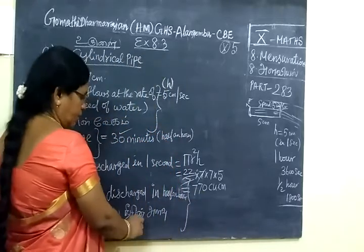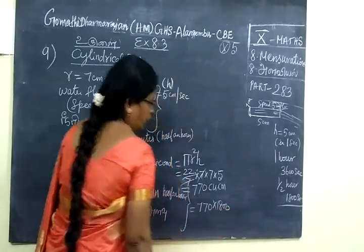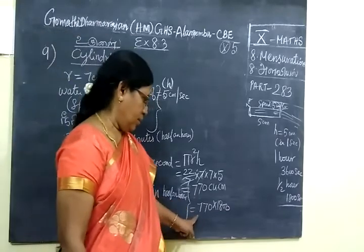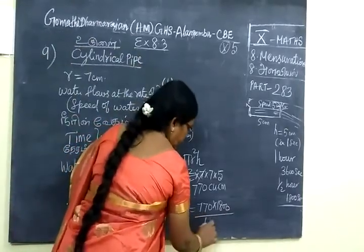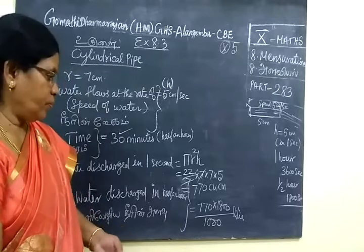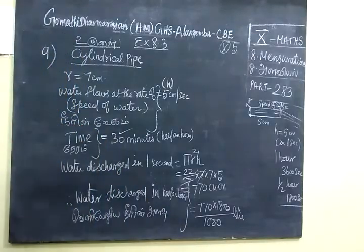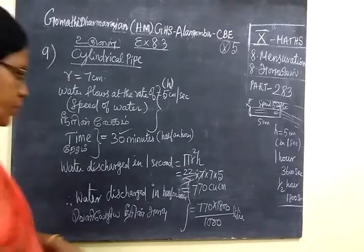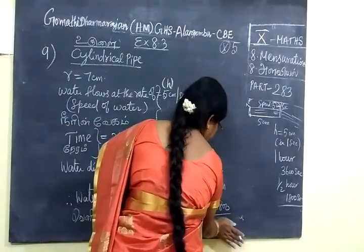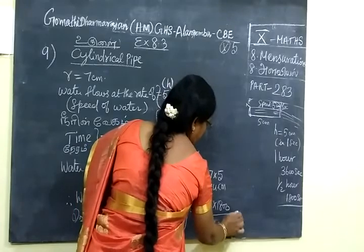So this is 770 times 1800. You have to divide by 1000 because this is in liters. So 1386 point 30 centimeter cube.